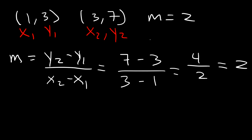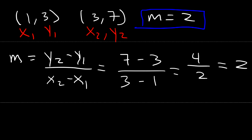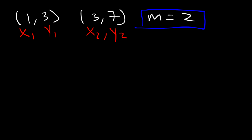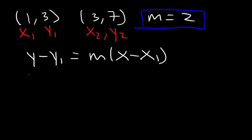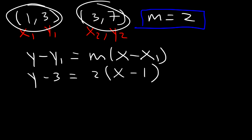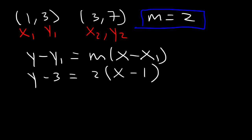Once you have the slope, you can write the equation in standard form, slope-intercept form, or any form you need. In this example, we're going to write the equation first in point-slope form. The formula is y - y1 = m(x - x1). Using the first point: y1 = 3, m = 2, x1 = 1. You can use either point — you'll get the same answer. So this is the answer in point-slope form.